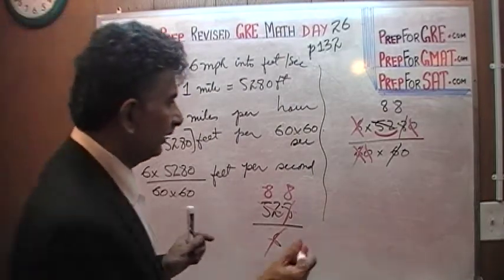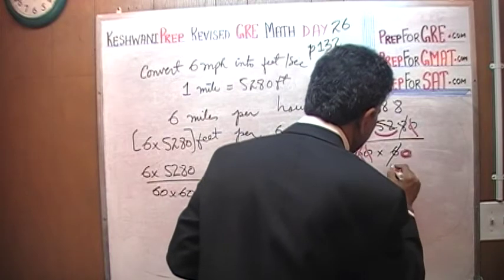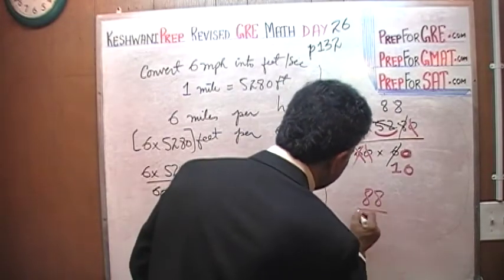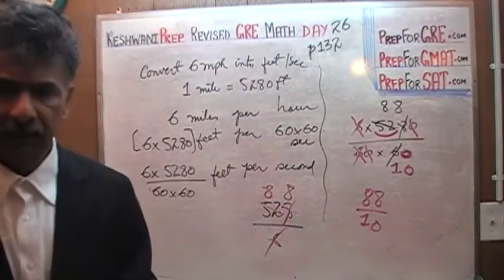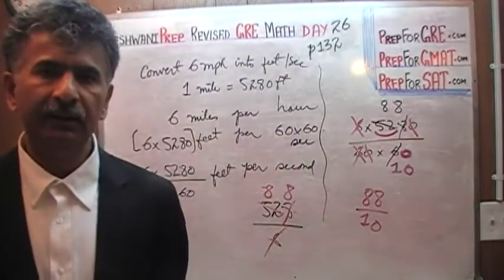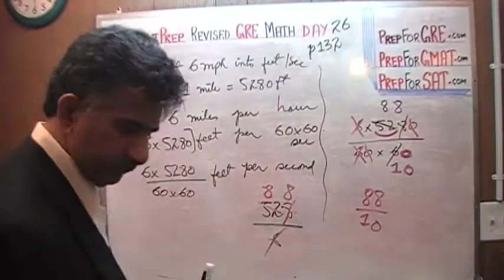We have just divided 528 by 6. We are basically left with 88 divided by 10. And of course, I don't need a calculator to figure that out. The answer is 8.8, 8.8 feet per second. That's all. Let's do one more, the next one.